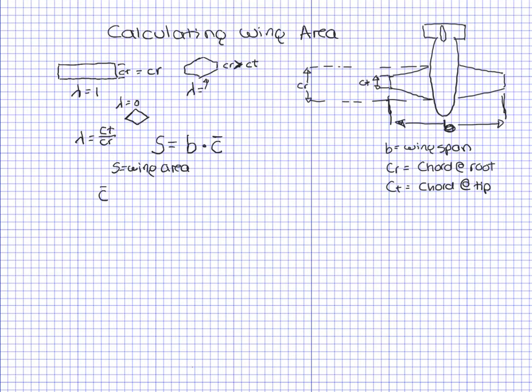The average chord for this course uses the following formula: average chord equals 2 times the chord at the root divided by 3, times (1 + lambda + lambda squared) divided by (1 + lambda), where C equals average chord, Cr equals chord at the root, and Ct equals chord at the tip.